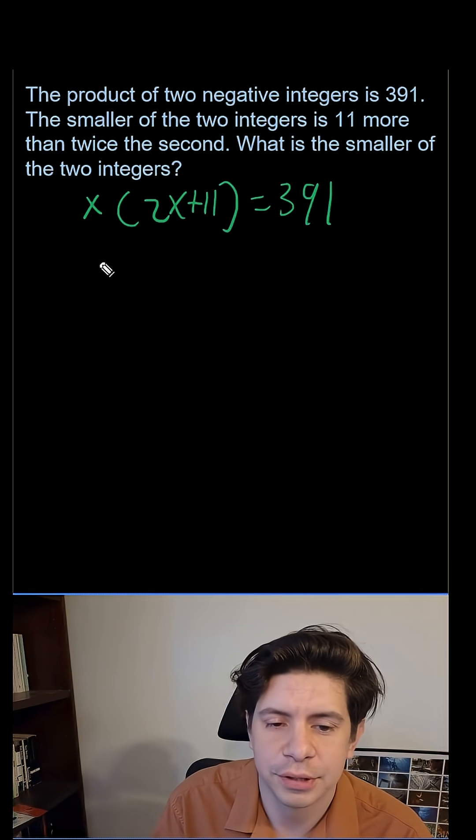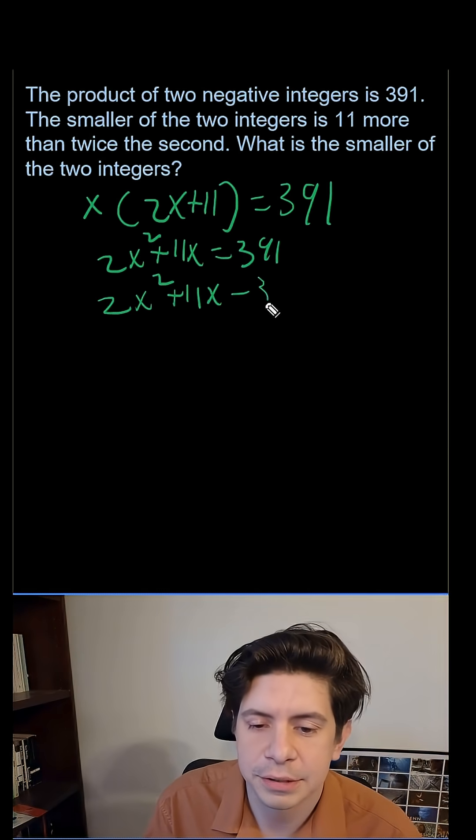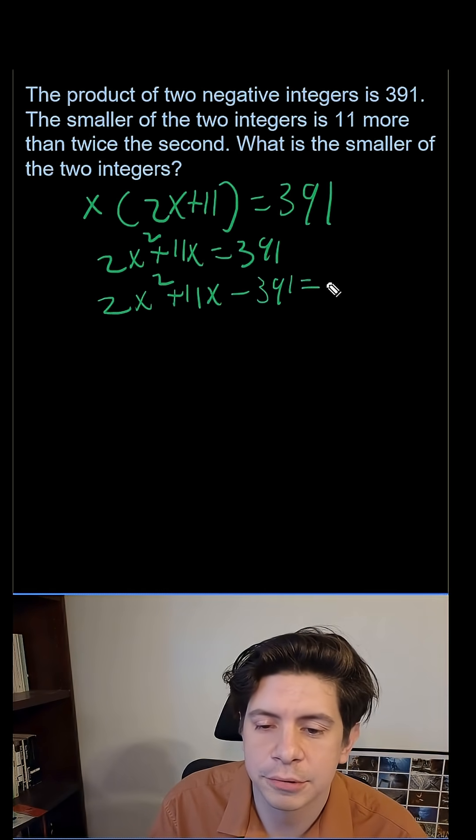From there, you can do 2x squared plus 11x equals 391. You can move it over, get 2x squared plus 11x minus 391 equals zero.